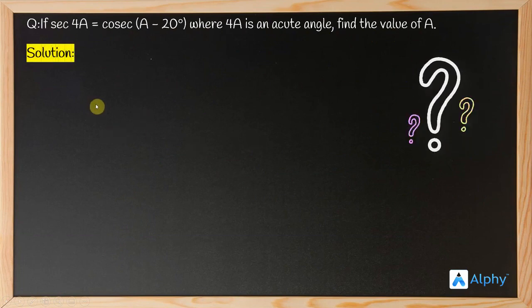What is given in the question? It is given that sec 4A equals cosec(A minus 20 degrees). Let's call this equation 1.